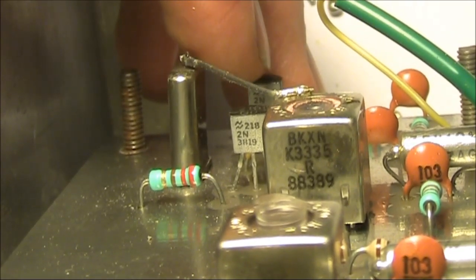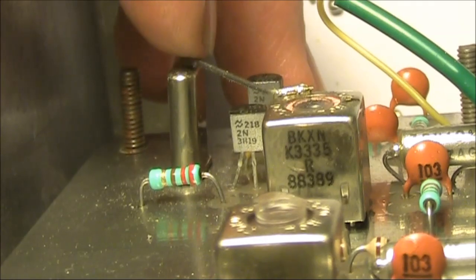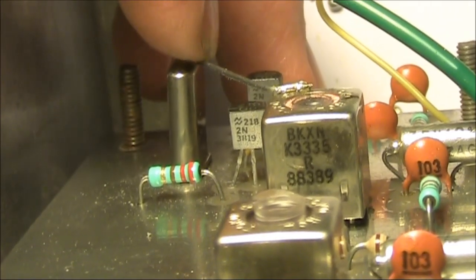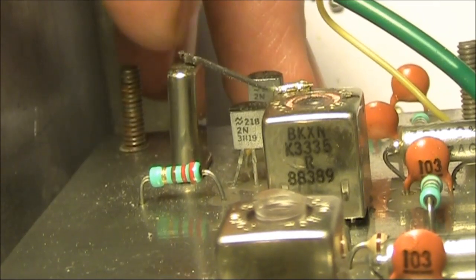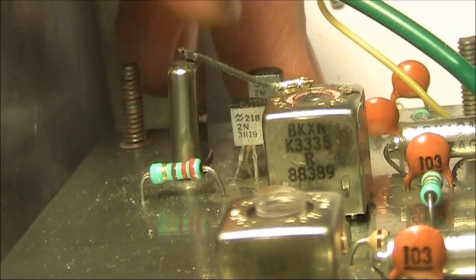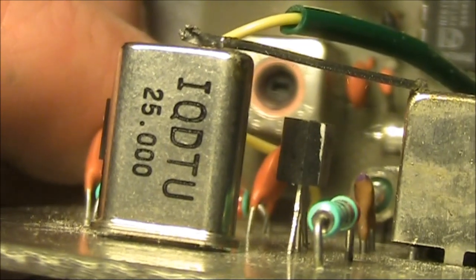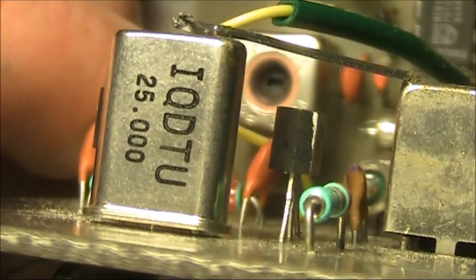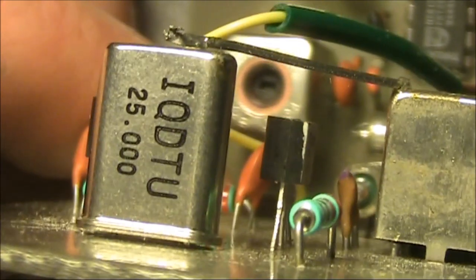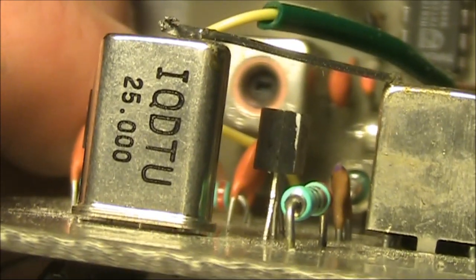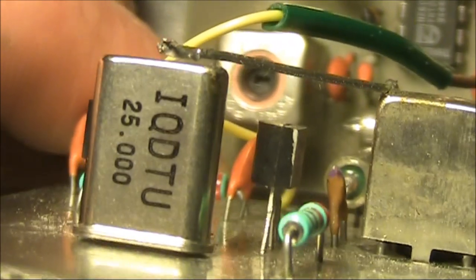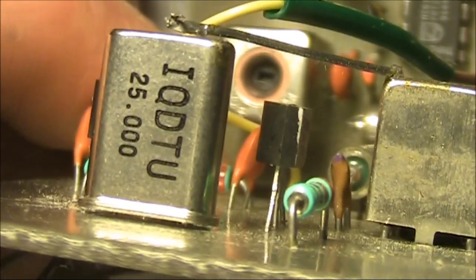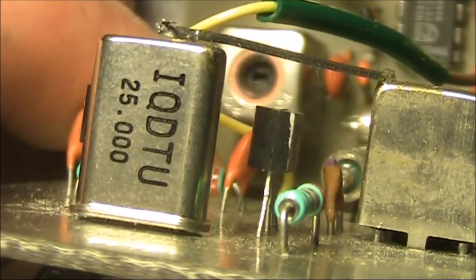Now this lead, I think it's meant to be soldered to the top of the crystal, but that has come adrift. Just looking at the crystal, it's a 25 megahertz crystal. Which is odd, because I would have expected for a 10 to 6 meter transverter, it would be a 22 megahertz crystal.